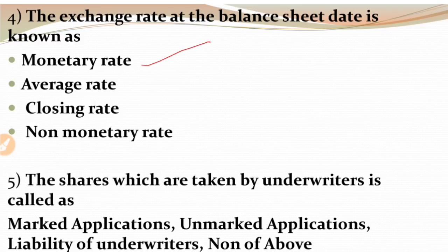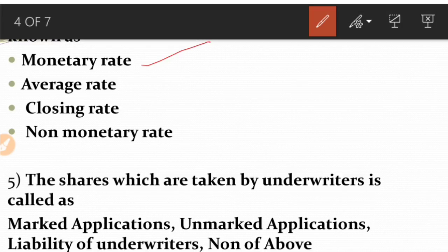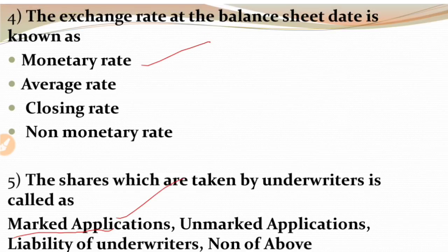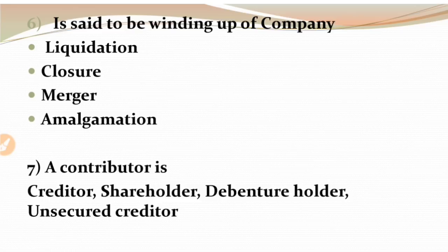MCQ 5: The shares which are taken by underwriters are called as - this question is from the chapter of Underwriting of Shares and Debentures. Options are marked applications, unmarked applications, liability of underwriters, or none of the above. Shares taken by underwriters are called marked applications. So the right answer is marked applications.